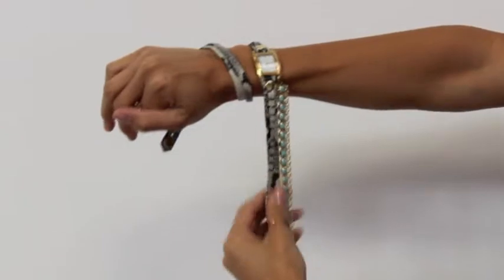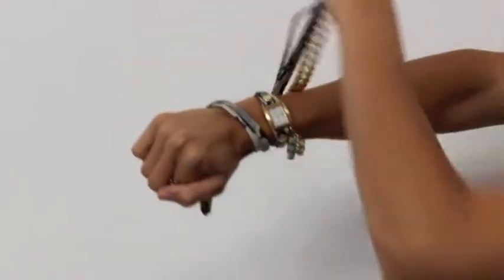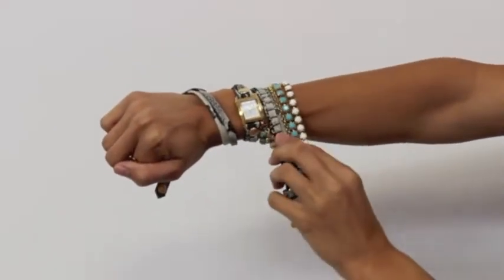Wrap that around first, and the buckle side next. Make sure the chain lays on the right side of the strap.